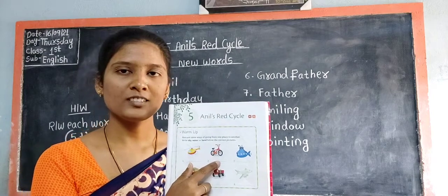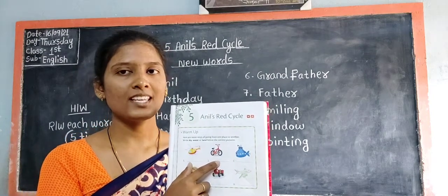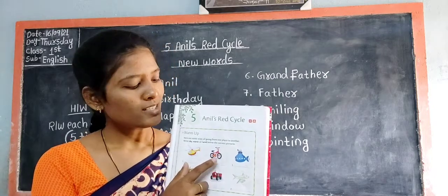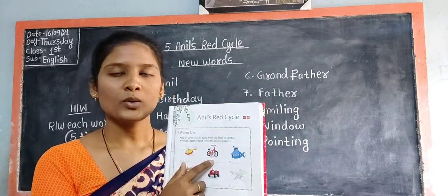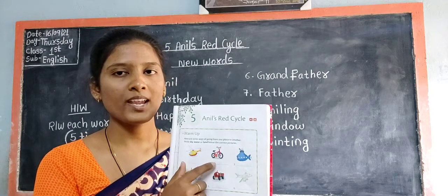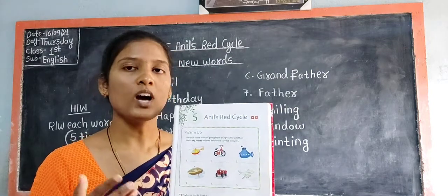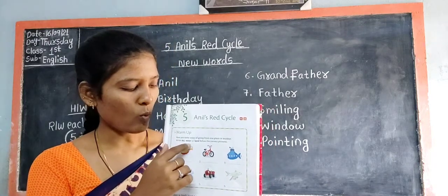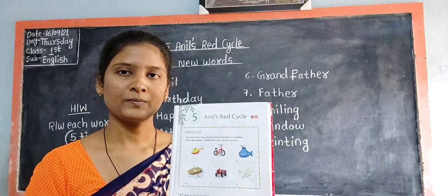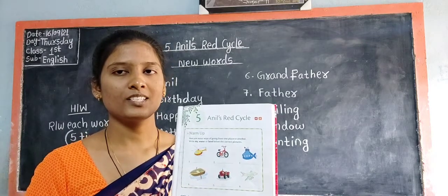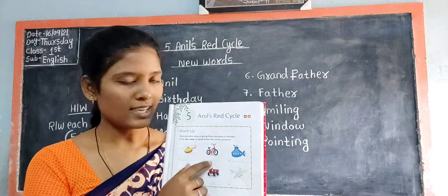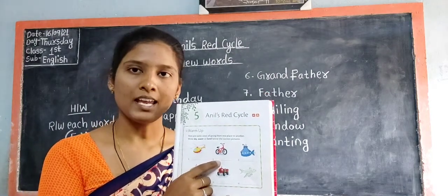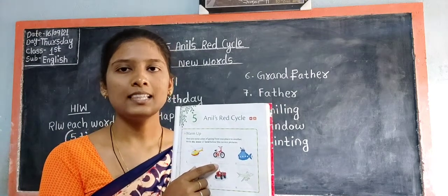Look at the second picture children. What can you see in the second picture? Cycle. So tell me children, through which way does a cycle move from one place to another — sky, water, or land? Land. So write land in the blank: L-A-N-D. Land.